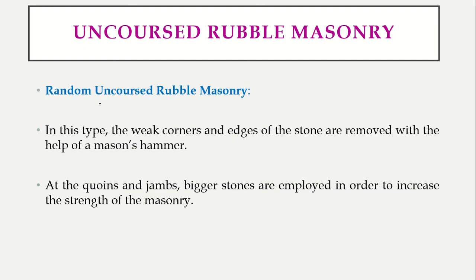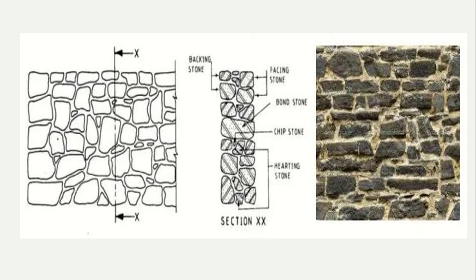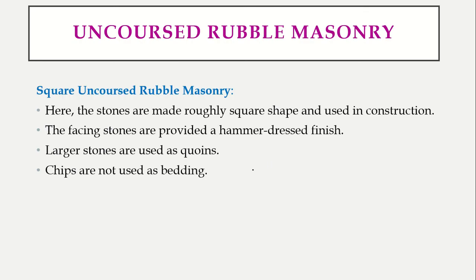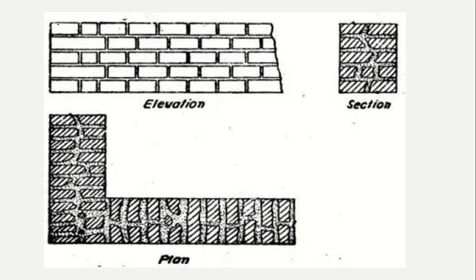In uncoursed masonry, stones are not at all dressed — they are directly taken from the quarry. In random uncoursed rubble masonry, just the corners or edges of the stone are slightly removed. In square uncoursed rubble masonry, the stone is made slightly square in shape so as to fit in properly, as you can see in the figure with slightly square-shaped stones.